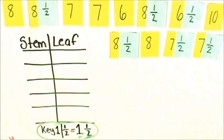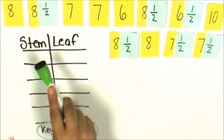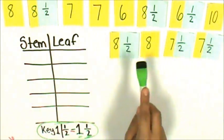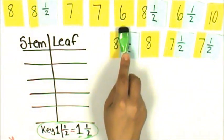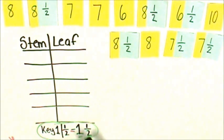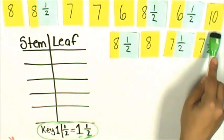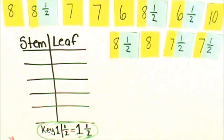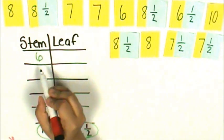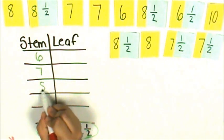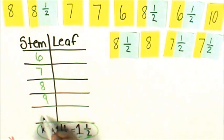Let's look back at our list. The smallest value is 6 and the highest value is 10. Let's write our stems from 6 to 10 without skipping any values, any whole numbers: 6, 7, 8, 9, 10.